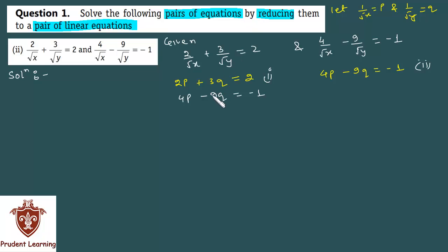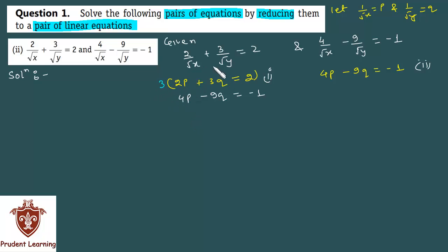If I want to eliminate q from the two equations, I will multiply the first equation by 3, since the second equation has 9q. This gives us 6p plus 9q is equal to 6, which I will write as the modified equation.